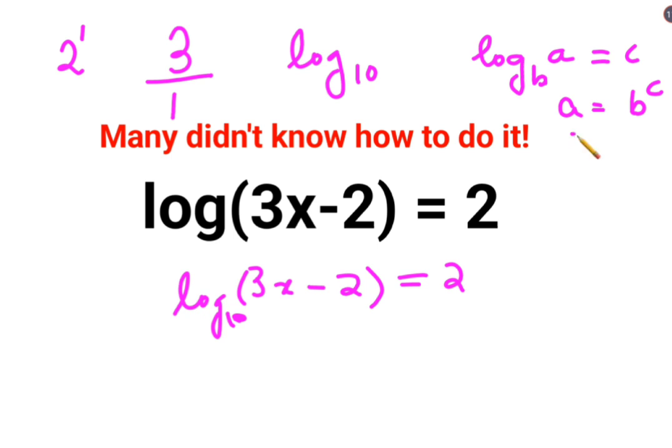Now, using this particular law, we can say 3x minus 2 equals to 10 raised to 2, which is 100.